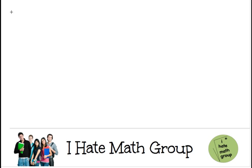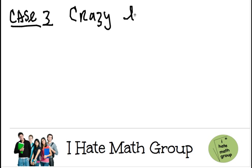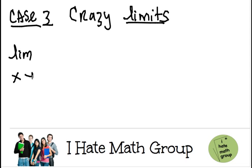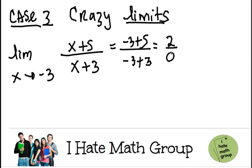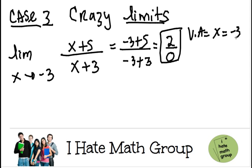Finally, let's go with case number 3, which I call the crazy limits. Let's say we have the limit when x approaches negative 3 and on the top we have (x plus 5) over (x plus 3). When I plug in negative 3, I get negative 3 plus 5 over negative 3 plus 3, which is 2 over 0. I try to factor this but I cannot, so I have to go to a different approach. This means I have a vertical asymptote at x equals negative 3.